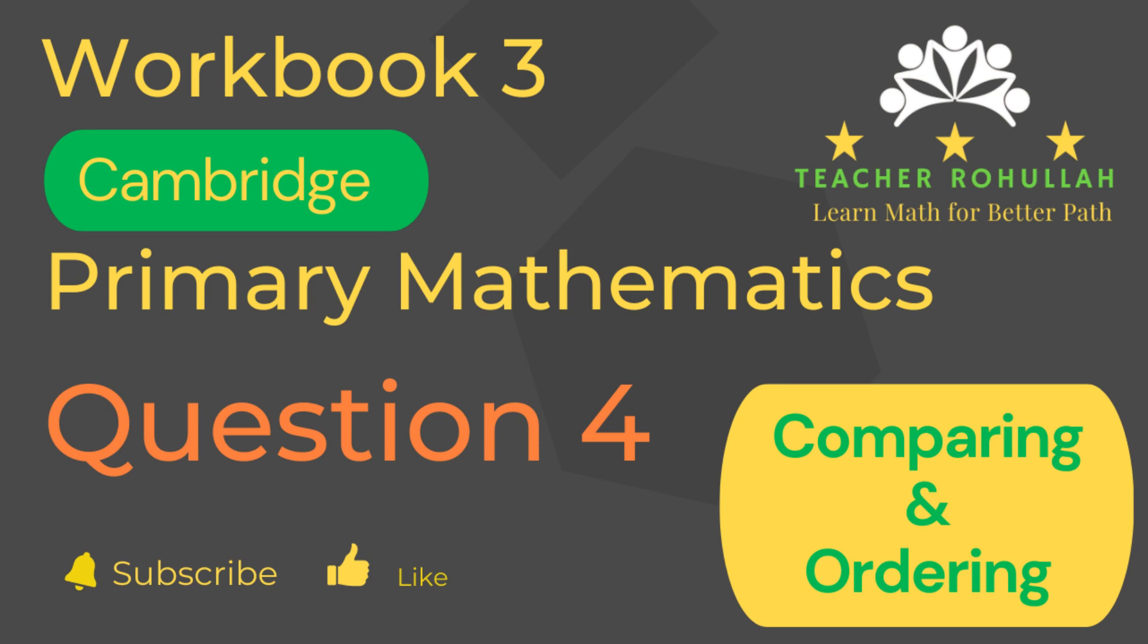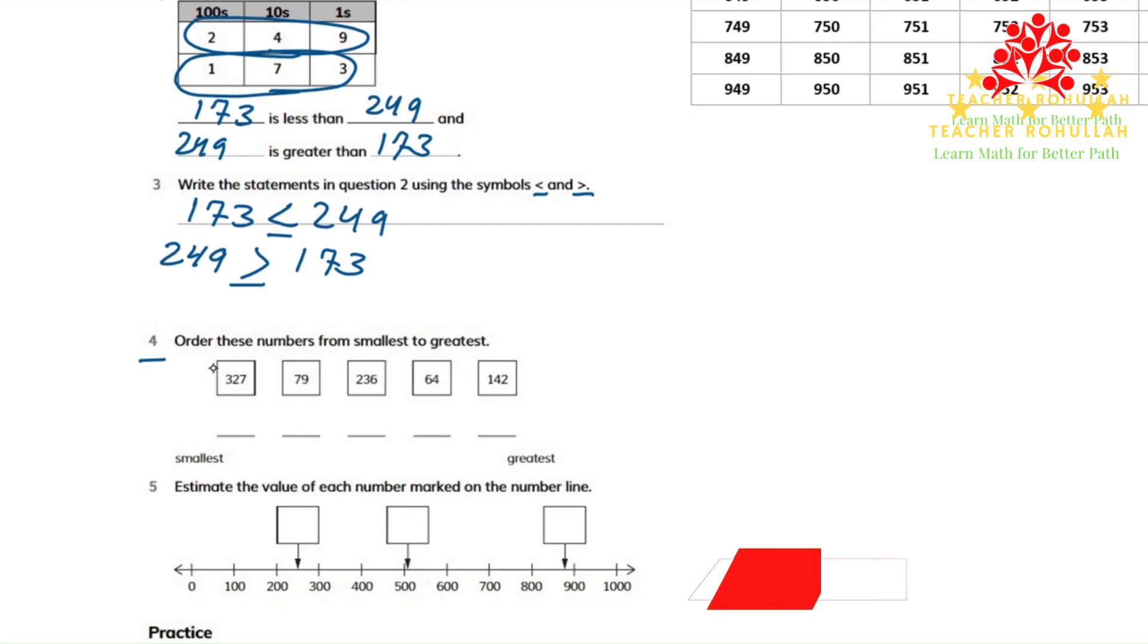Let's now move to the question and solve it. In question number four it says, order these numbers from smallest to greatest. From smallest to greatest.